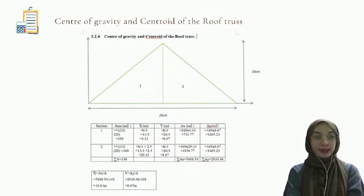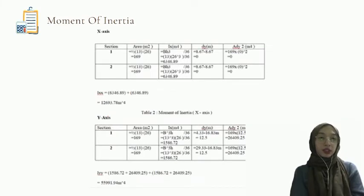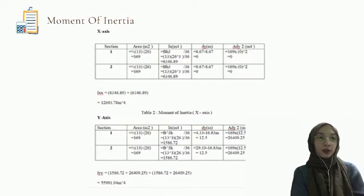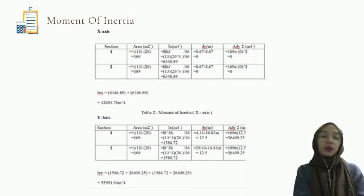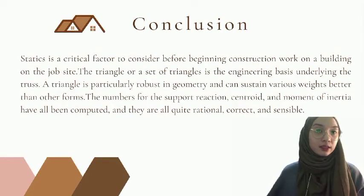For the y-axis of the centroid, we get 8.67 m. For the moment of inertia, the x-axis gives 126,93.7 cm to the power of 4, and the y-axis gives 55,991.94 cm to the power of 4. These are the results of our moment of inertia values for the roof.